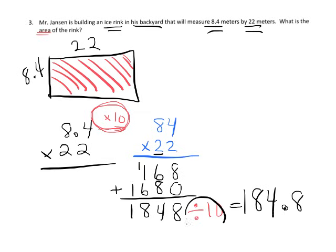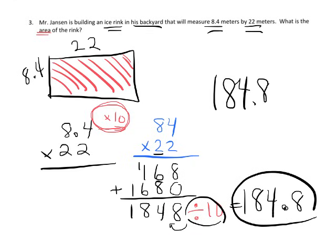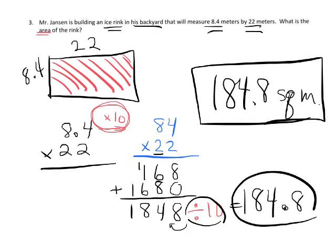Because when you're dividing by 10, you just kind of move that decimal over. And there is our answer. But really, if we're talking about area, we really should call it 184.8 square meters. Really, this is the better, more proper answer.